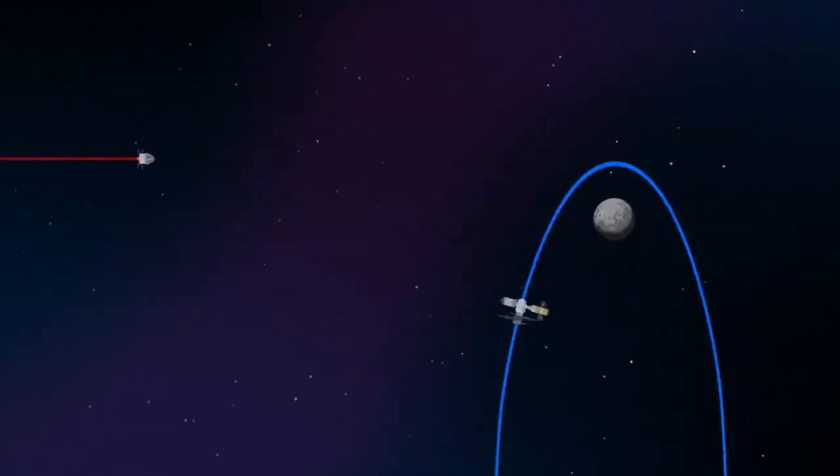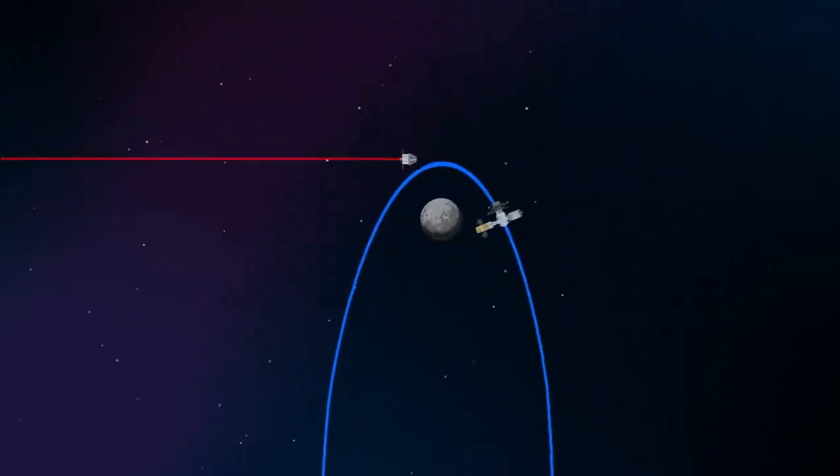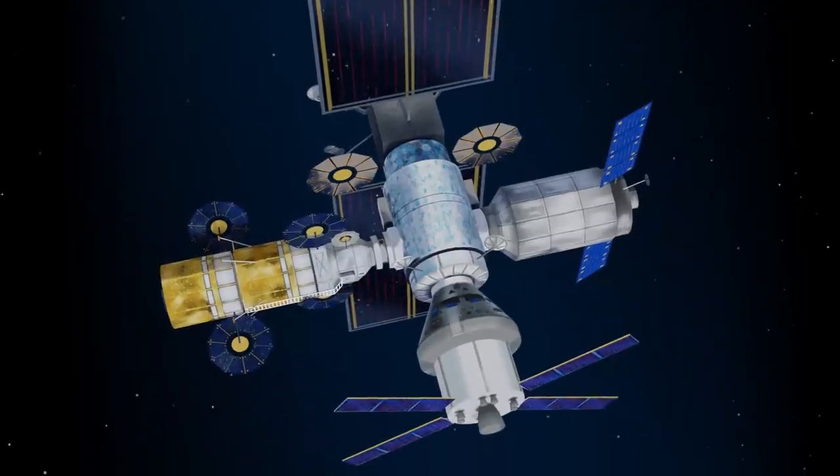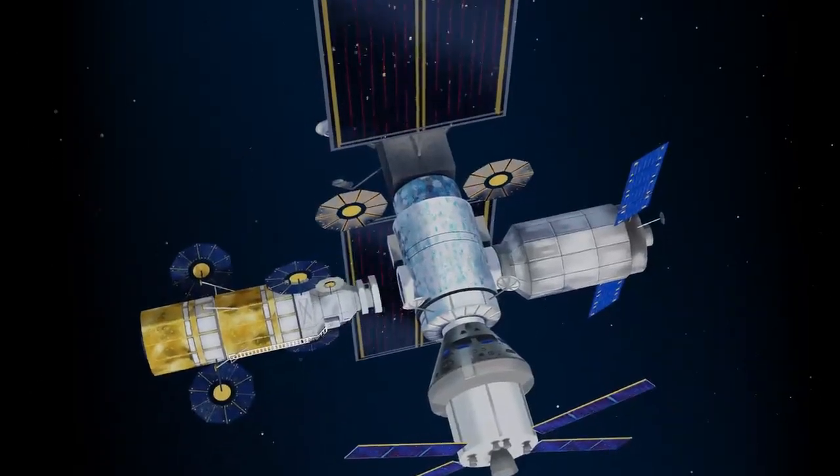Returning to our crew as they approach Gateway, the Orion must match the elliptical orbit of the station in order to successfully dock. Once on board, pre-selected crew members transfer to the lunar lander, while those assigned to Gateway remain on station.